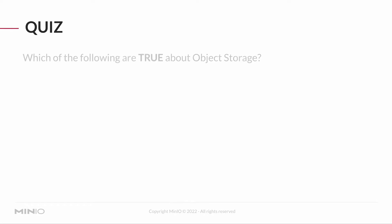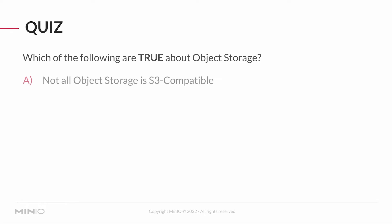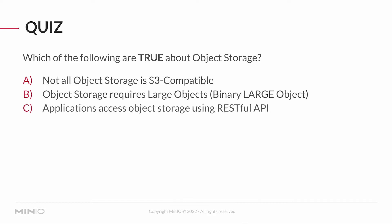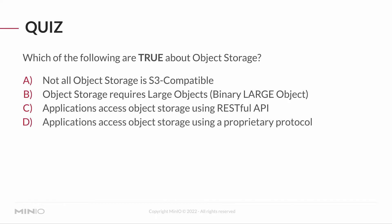Our first quiz question is: which of the following are true about object storage? A) Not all object storage is S3 compatible. B) Object storage requires large objects. C) Applications access object storage using the RESTful API. D) Applications access object storage using a proprietary protocol. Or E) Object storage requires specialty hardware.